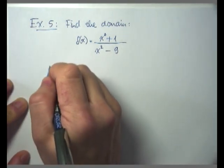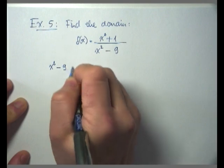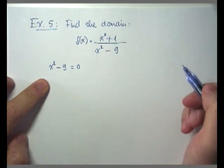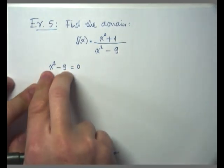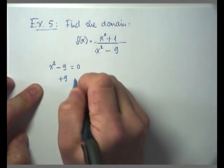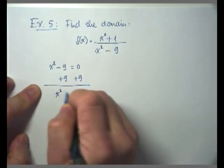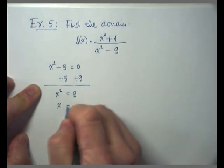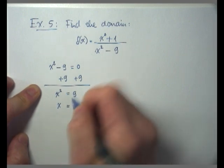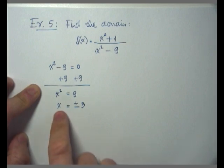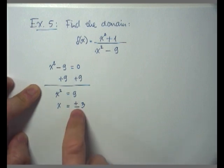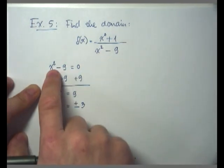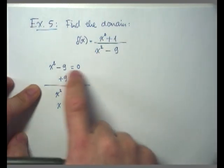I am going to set the denominator equal to zero first to find all the bad values causing the denominator to be zero. Solving the denominator for zero, I need to add 9 to both sides, giving me x squared equals 9. Using the square root property, x equals plus and minus 3, because you're taking the square root of 9. These are the bad values, because positive 3 or negative 3 cause x squared minus 9, the denominator, to equal 0.